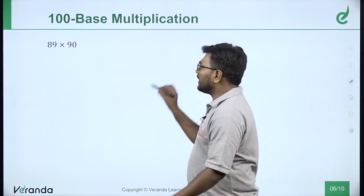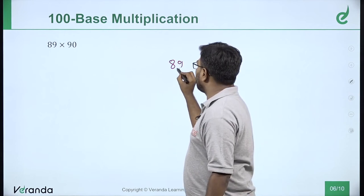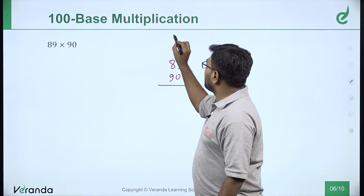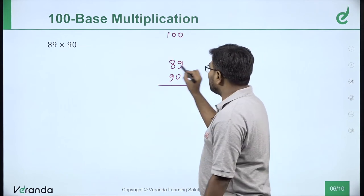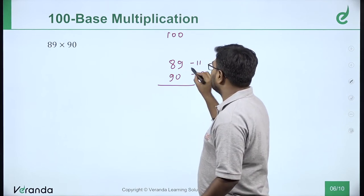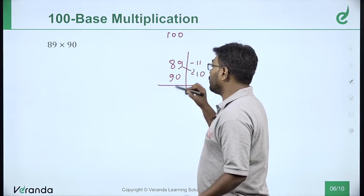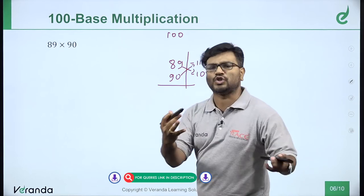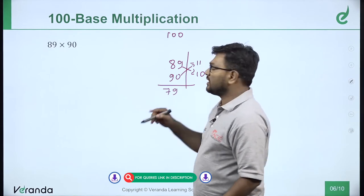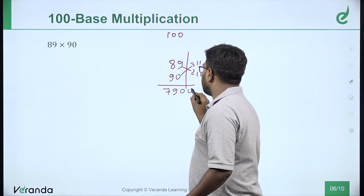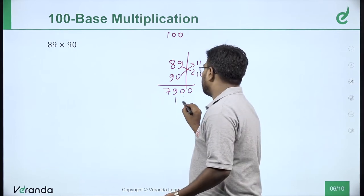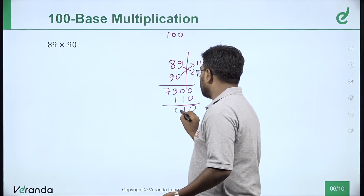Another question: 89 into 90. Base is 100. Using one direction: 89 minus 10 equals 79, 79 into base gives 7900. Next step: minus 11 times minus 10 equals plus 110. The answer is 8010.